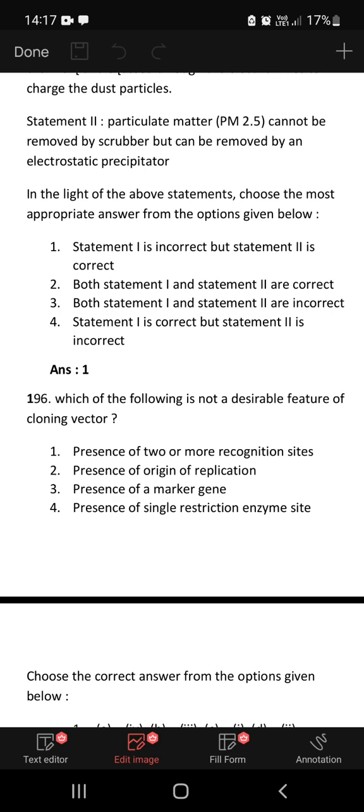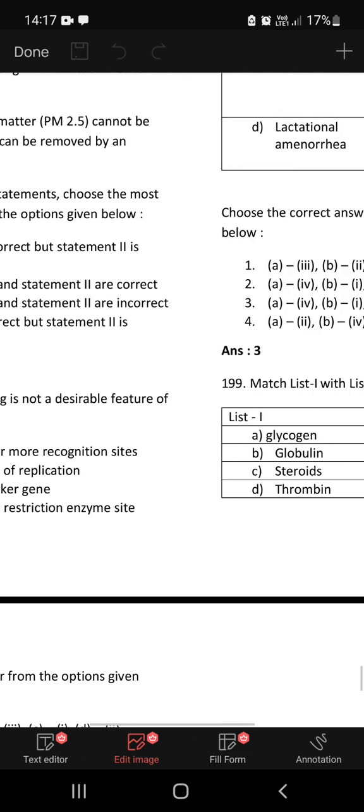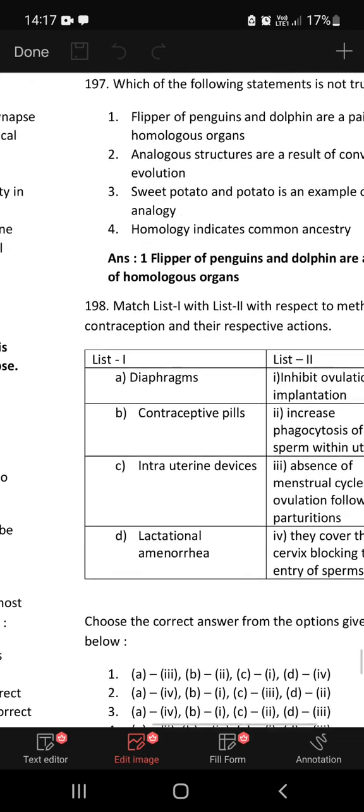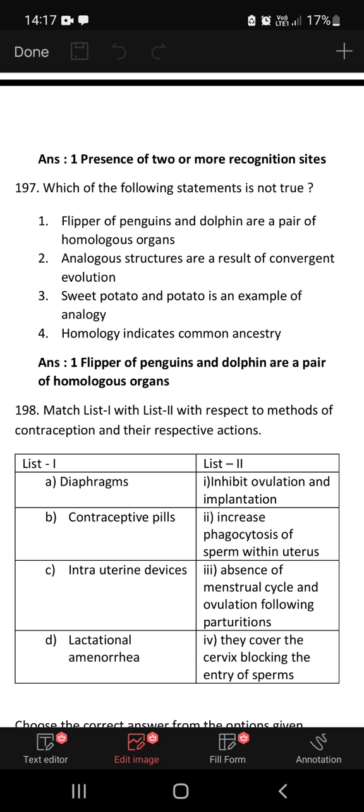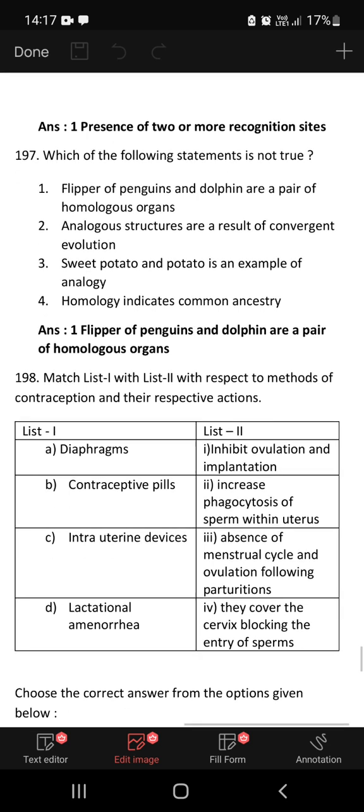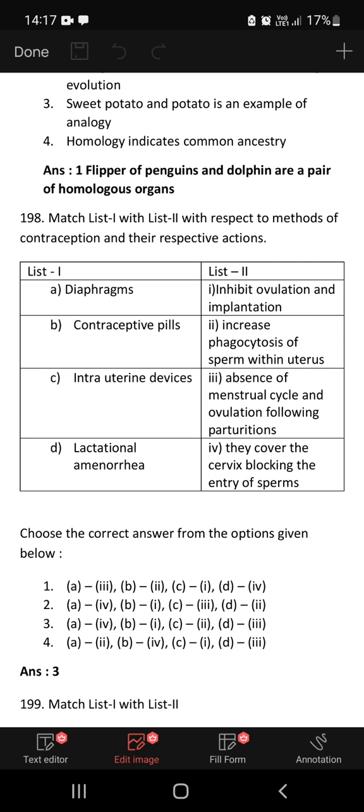Which of the following is not a desirable feature of cloning vector? Presence of two or more recognition sites, that is not a desirable feature of cloning vector. Which of the following statement is not true? Flipper of penguins and dolphin are a pair of homologous organs. This is a wrong statement.